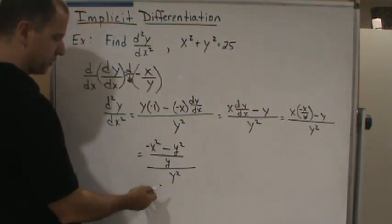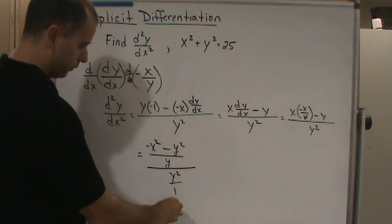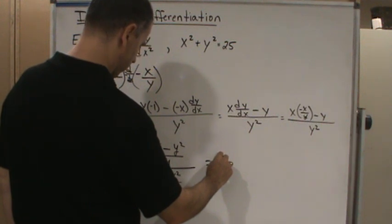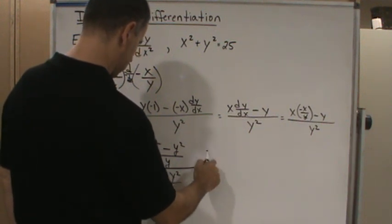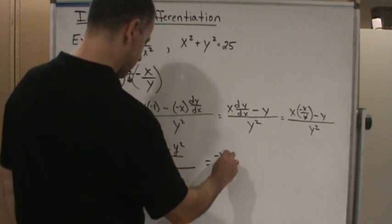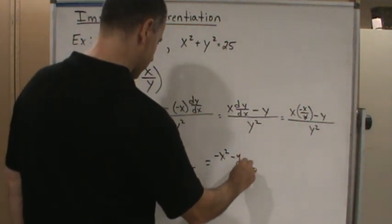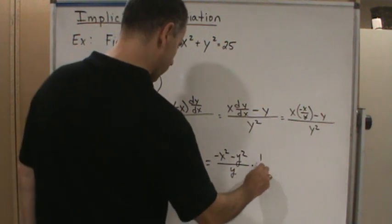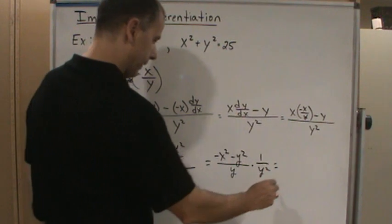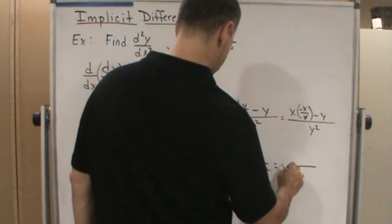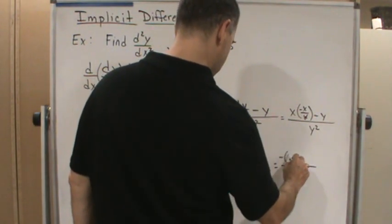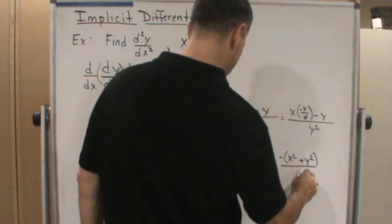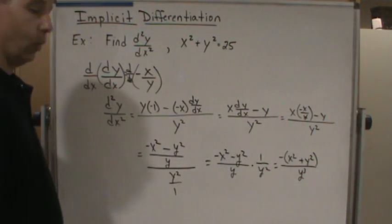Now, if I change this to a multiplication, since I have this over 1, then of course, this is going to end up being negative x squared minus y squared over y times 1 over y squared. And that's going to give me negative x squared plus y squared over y cubed.